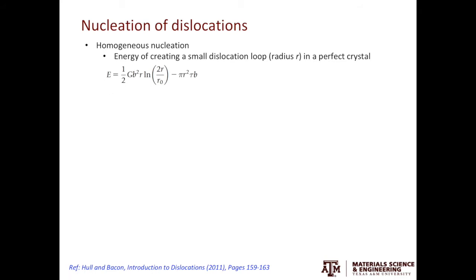In this equation, E denotes the energy of creating a small dislocation loop with radius R in the perfect crystal. The equation looks rather complicated, but we can break that down into two parts. The first part of the equation depicts the increase in elastic energy. We know there is a strain field around dislocation lines. Therefore, by introducing a dislocation line into the system, we increase the elastic energy of the system. The second part of the equation depicts the work done by the applied stress to create this small dislocation loop.